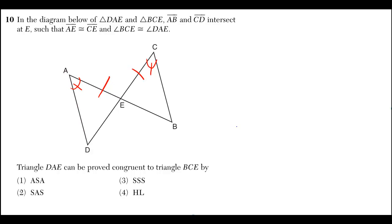Triangle DAE can be proved congruent to triangle BCE by angle side angle, side angle side, side side side, or hypotenuse leg.